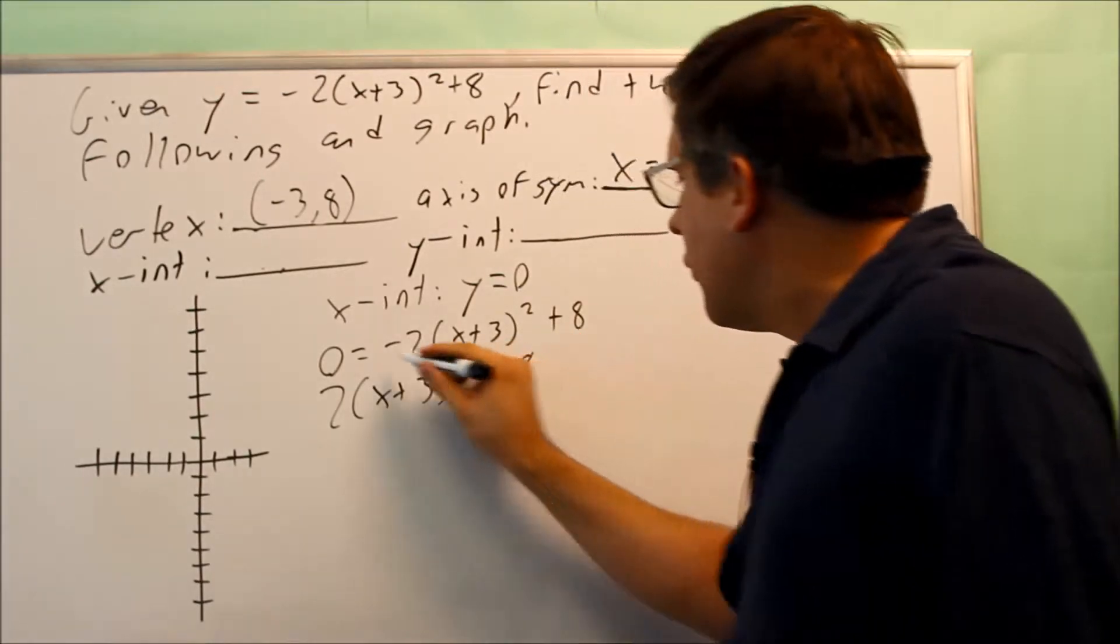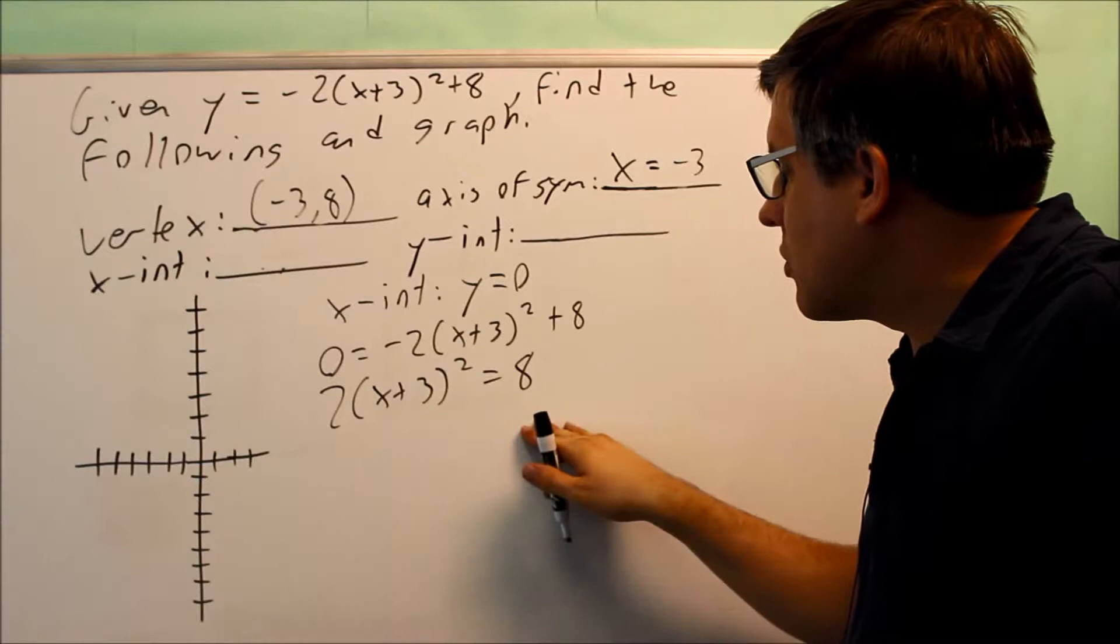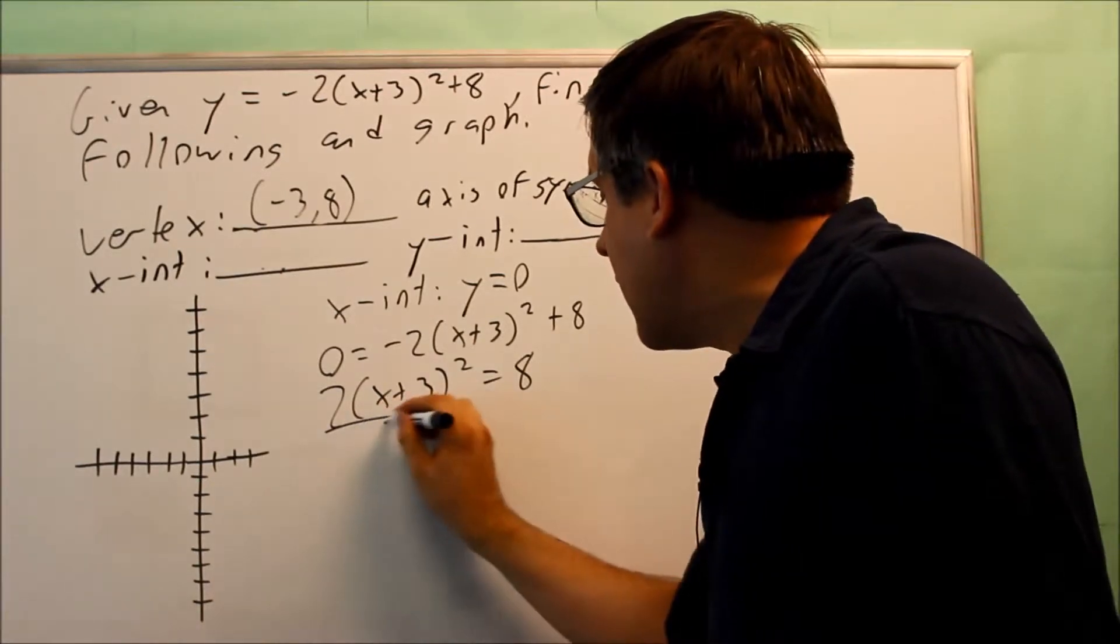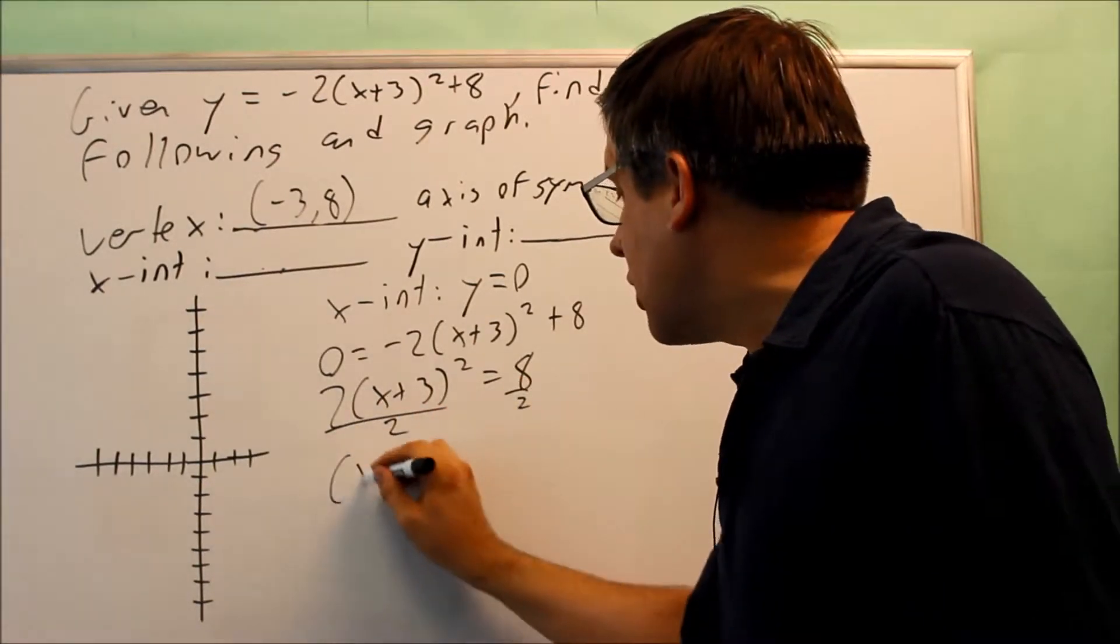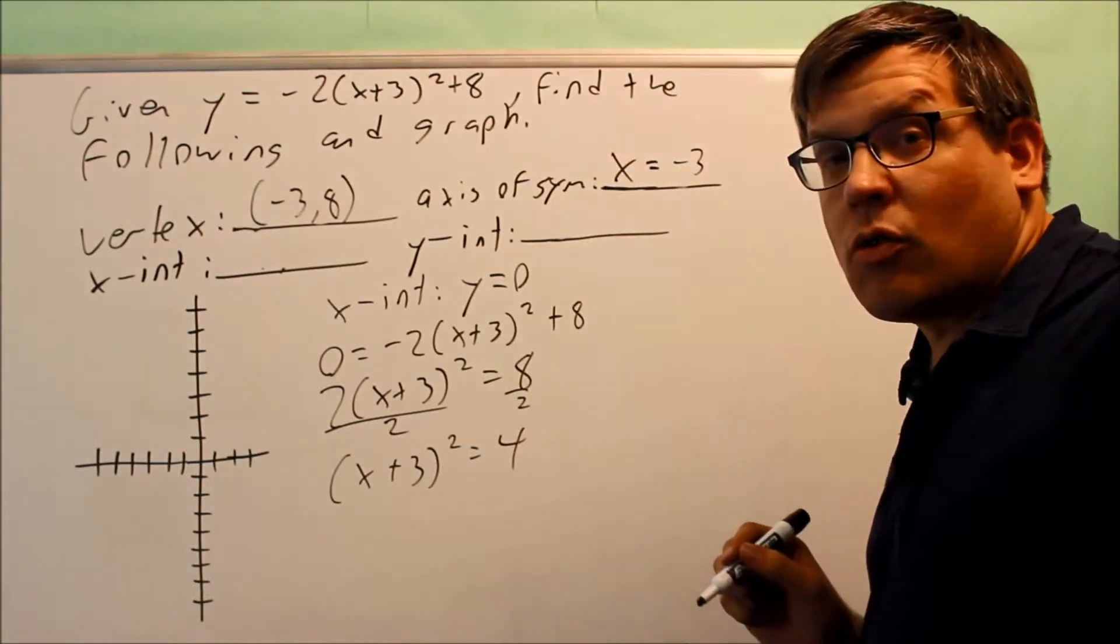So I have, if I move this part over the equal sign, that's going to become positive, and I get this. And so now I want to isolate the square, which means I want to divide both sides by 2, and then I get this. x plus 3 squared is going to equal 4.